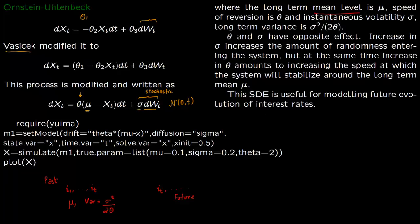So the long term mean is mu and speed of reversion is theta. So theta we call as speed of reversion and instantaneous velocity is sigma. Long term variance is sigma square by 2 theta.